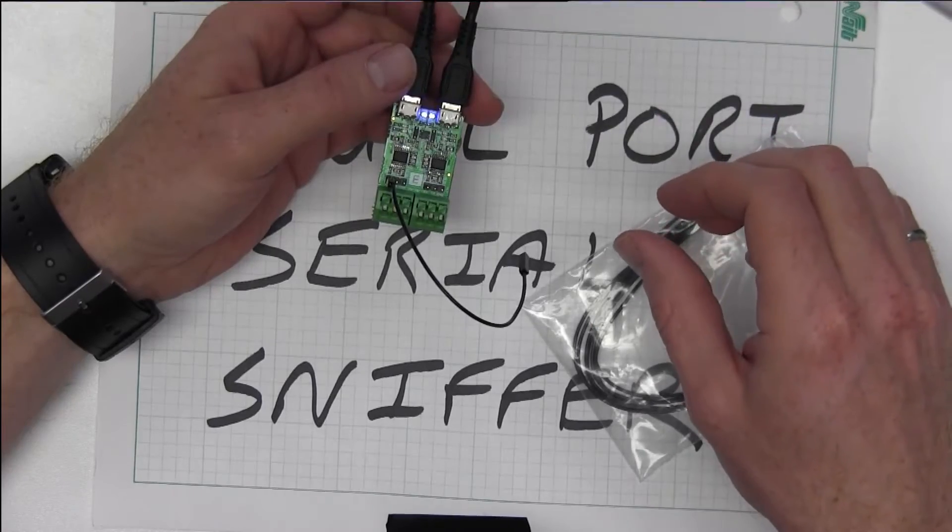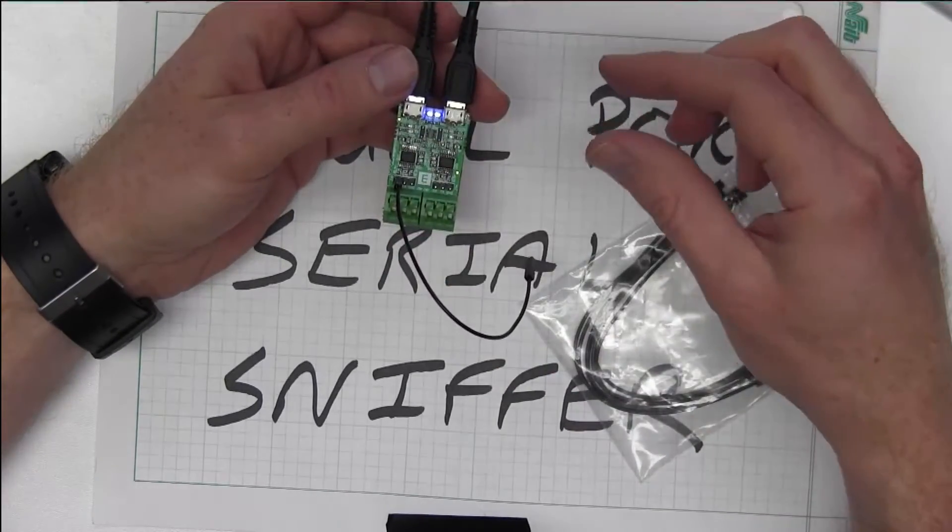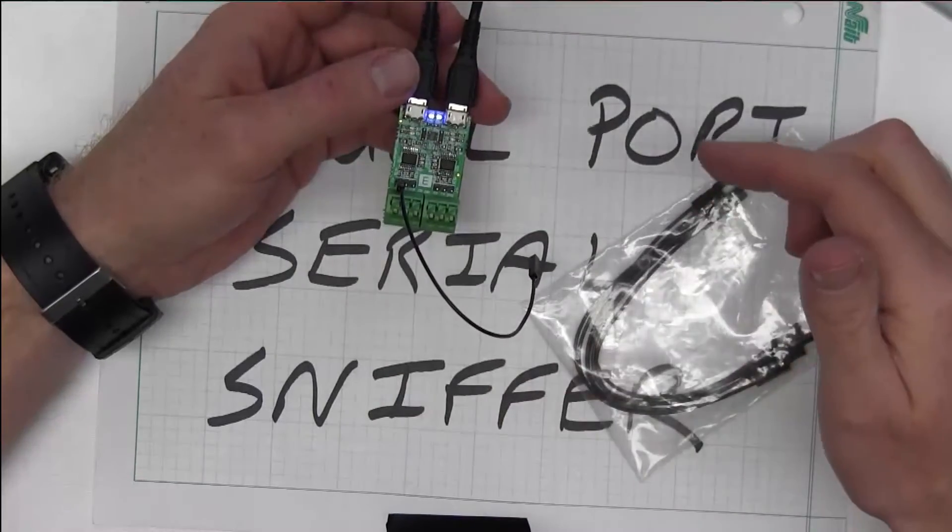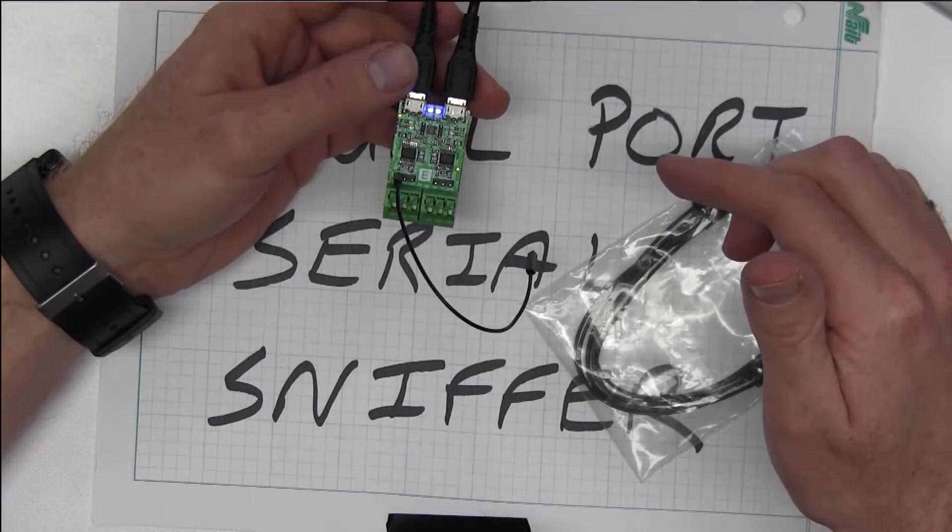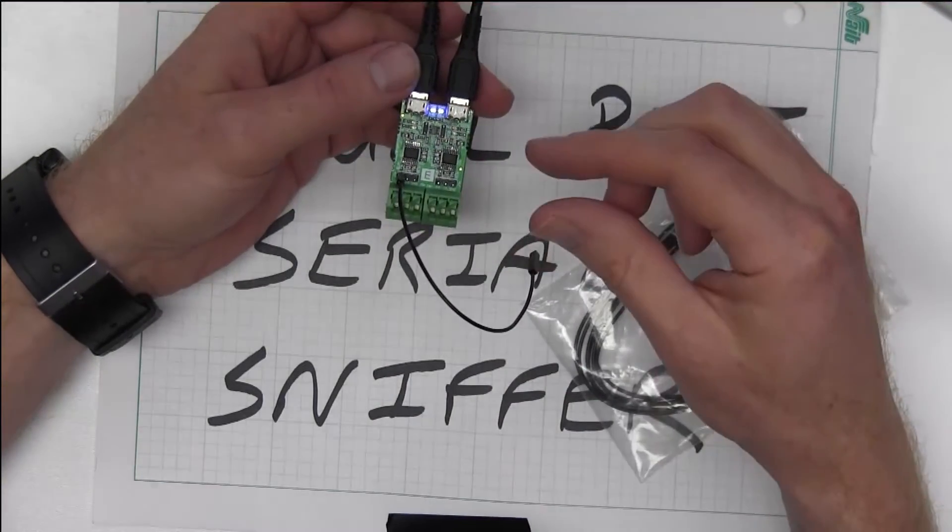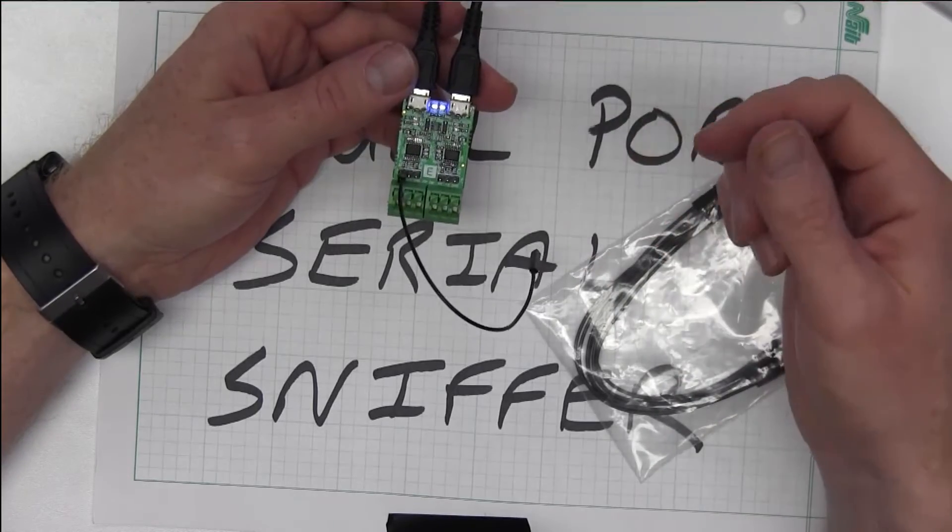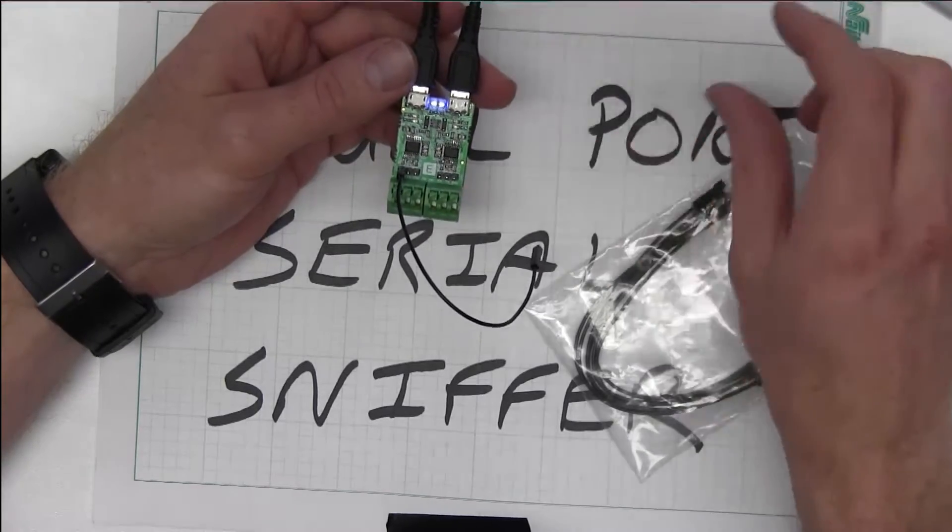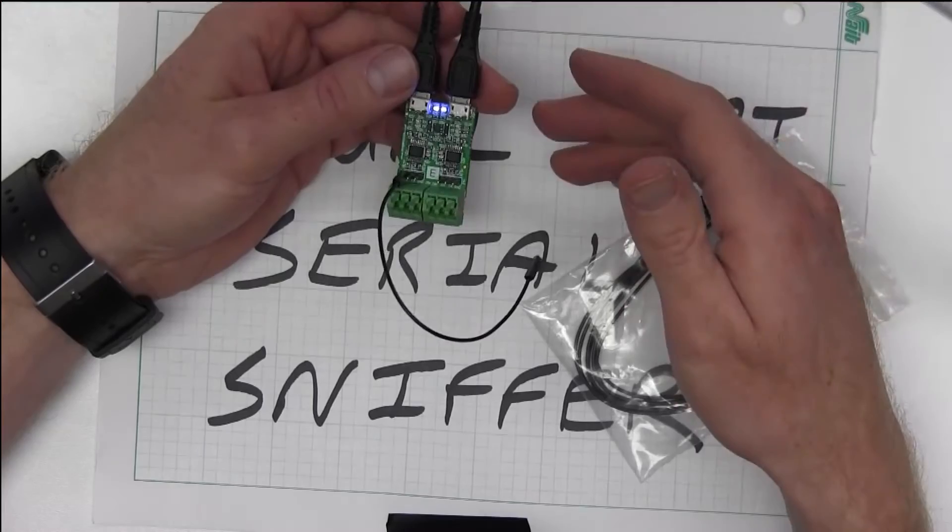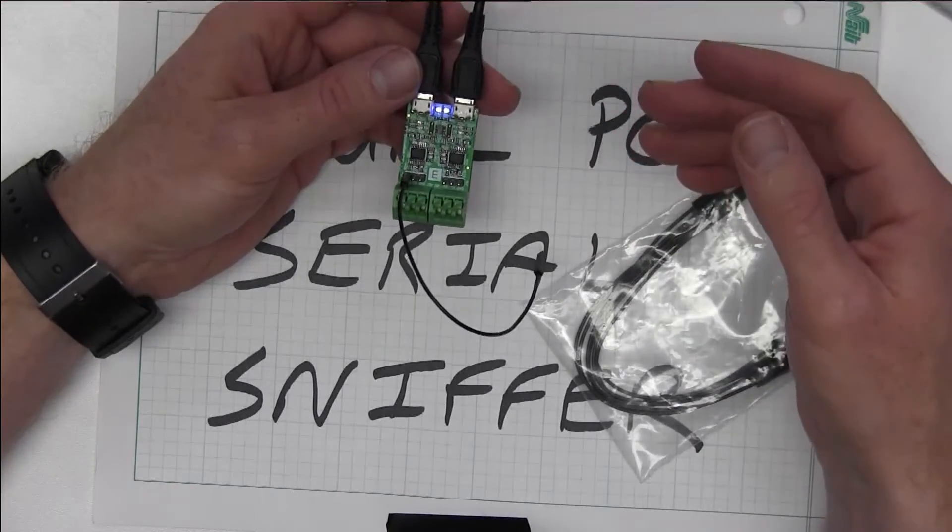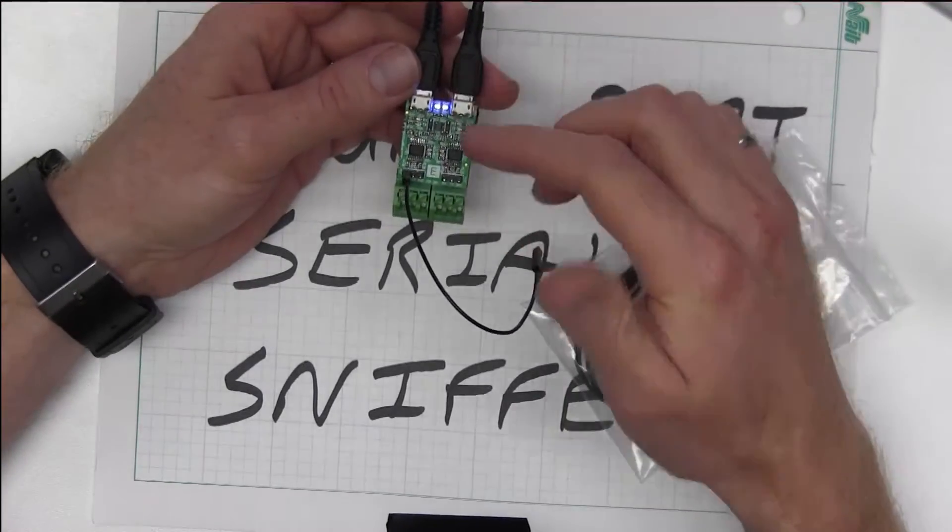But you can't attach just transmit and receive from one serial port to there because the transmit out of here will load down the line on your target board. So if you just want to be looking at what's going on on a particular transaction pair in a serial connection, say between a microcontroller and a Wi-Fi module or something like that, then you would use both of these.